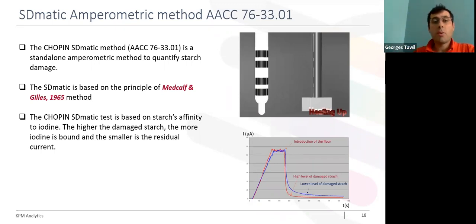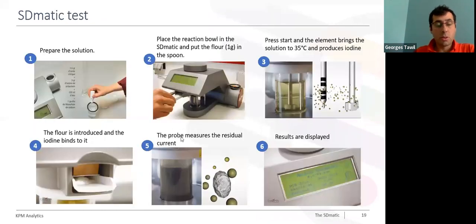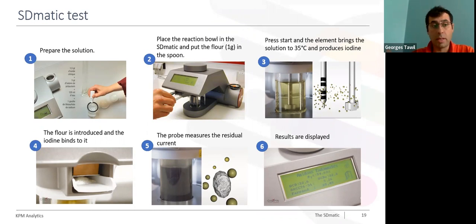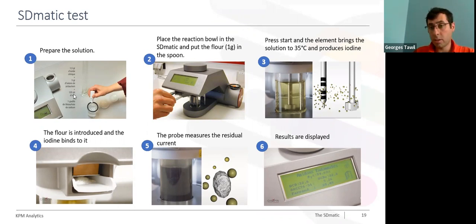Let me show you how easy it is to run an SD-MATIC test. What the operator needs to do is very simple. The first step is to prepare a solution composed of 1.5 grams of citric acid, 3 grams of potassium iodide, 120 milliliters of distilled water, and at the end, one drop of thiosulfate.